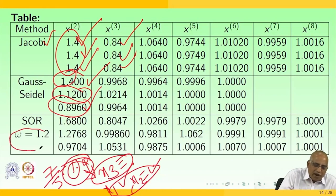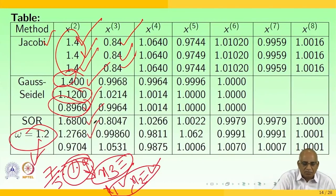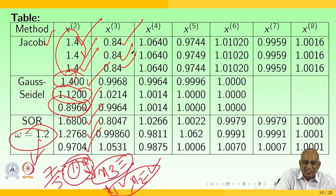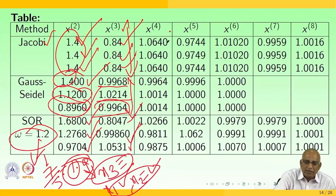With the SOR method using omega = 1.2 (the relaxation parameter): x1 = 1.6800, x2 = 1.2768, x3 = 0.9704. Moving to the next iteration: for Jacobi, the values are approaching the solution; for Gauss-Seidel: 0.9968, 1.0214, 0.9964; and for SOR with omega = 1.2: 0.8047, 0.9986, 1.0531.